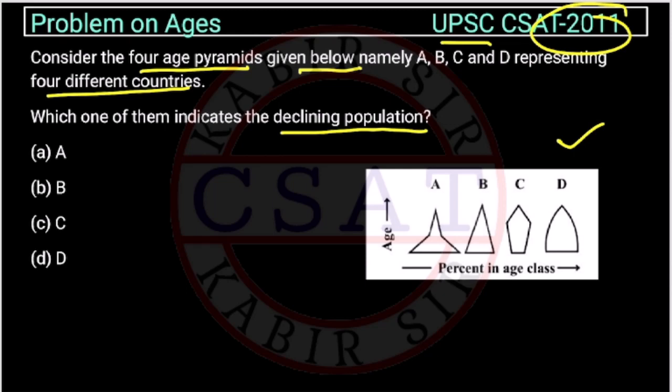Which one is showing the declining population? So, declining population will be when the base, see here, the age is increasing as we are going up. So, the upper part will denote the older population and this part will denote the younger population.